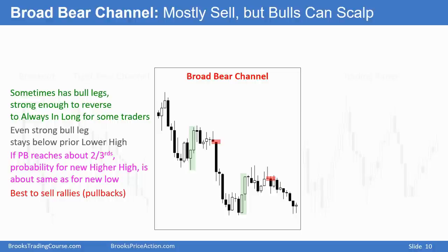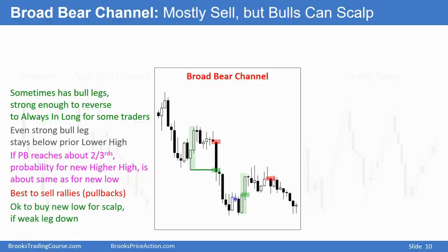Most traders should only be selling rallies and not worrying about buying, unless the channel is so broad and so flat that it's almost a trading range. Some bulls will buy reversals up — here we got a second entry buy. Others will buy at the prior low and buy more on the reversal up. And then when the trend resumes down — here we have a double top bear flag or a wedge — they sell out of their longs for a scalp. And bears will sell these breakouts of bear flags as well.